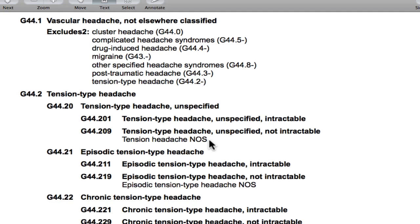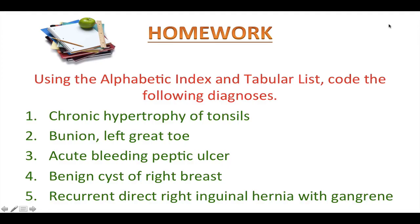I hope you got it right. Alright, this is your homework. Using the alphabetical index and tabular list, code the following diagnoses: Chronic hypertrophy of tonsils. Bunion, left great toe. Acute bleeding peptic ulcer. Benign cyst of right breast. Recurrent direct right inguinal hernia with gangrene. If you take your time and strictly follow the basic coding steps, then you should be fine. I will post the answer keys on my website. Also, if you need more homework, please sign up for our mailing list.